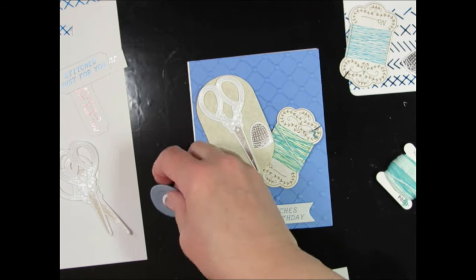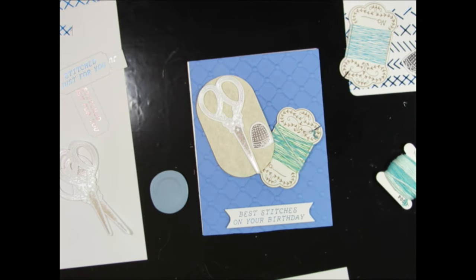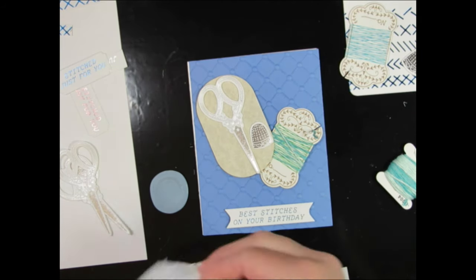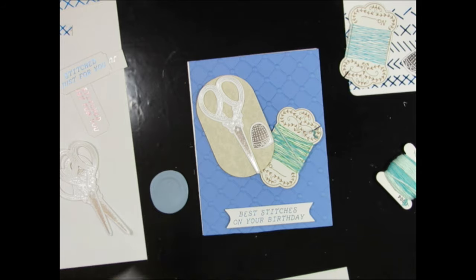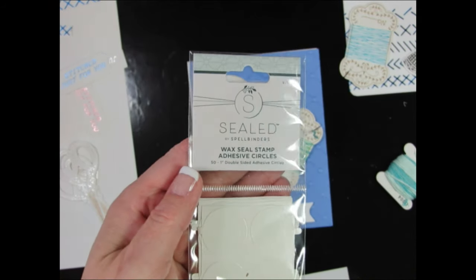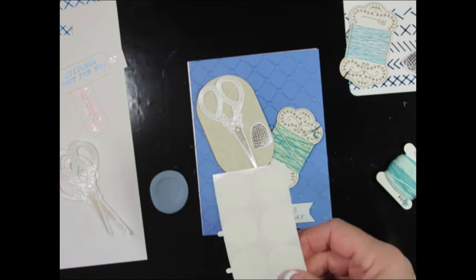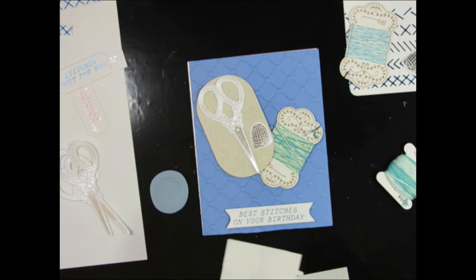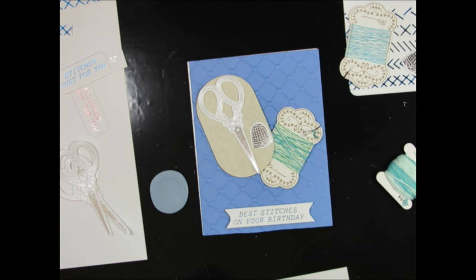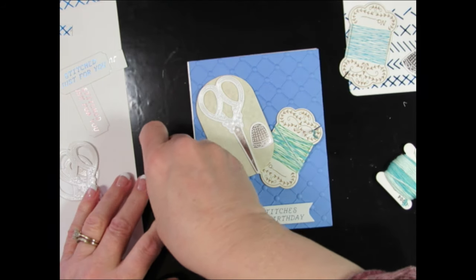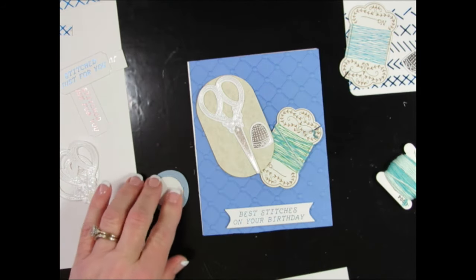This package contains these wax seal adhesive circles. And when you're a member of any of the Spellbinders club kits, you do get a discount on Spellbinders products. And you can also get all the clubs and it's called the Whole Caboodle.